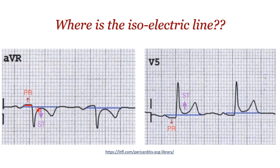If you say this is an ST depression, I would argue: why not call it a PR elevation? The only area on the ECG with no electrical activity at all is the area between two complexes — after the T wave and before the next P wave. So your baseline should be the TP segment. That area here is your baseline.